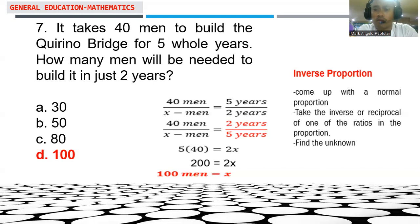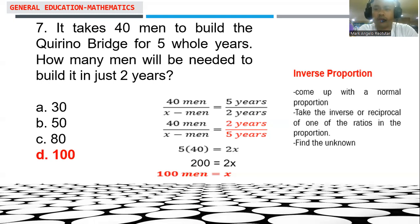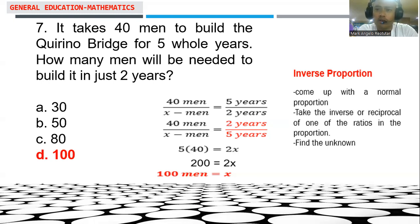Since we need the bridge built in only 2 years instead of 5, we need more men working. Using a normal proportion would give an impractical smaller value. Therefore, we apply the inverse proportion for this particular case.